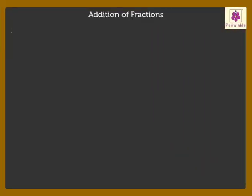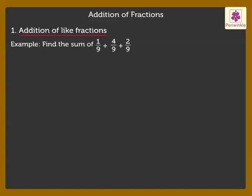1. Addition of Like Fractions. Find the sum of the given fractions. Since these are like fractions, we simply add the numerators — that are 1, 4, and 2 — and write the common denominator 9 as it is, which gives us the answer 7 upon 9.